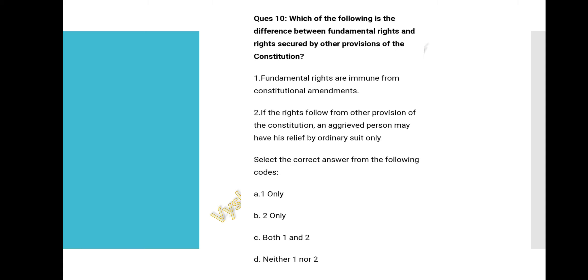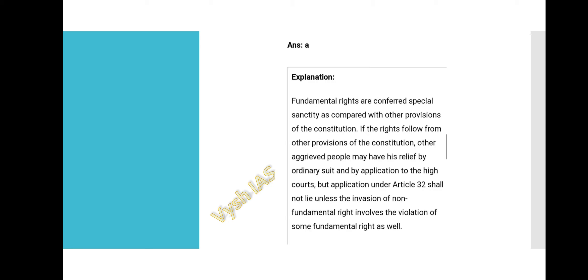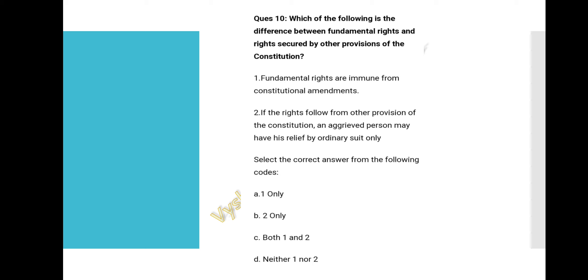Question 10: What is the difference between fundamental rights and rights secured by other provisions of the constitution? Statement 1: Fundamental rights are immune from constitutional amendments. Statement 2: If rights follow from other provisions, an aggrieved person may seek relief only by ordinary suit. Option A, 'one only,' is correct. Fundamental rights have special sanctity. For other constitutional rights, relief may be sought by ordinary suit or application to High Courts, but Article 32 does not apply unless a fundamental right is also violated.